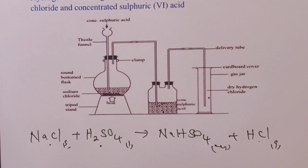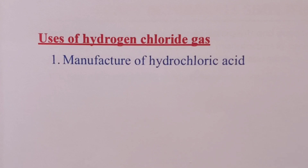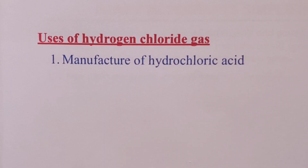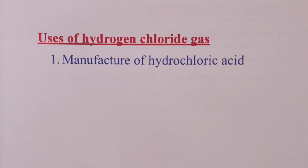We are finally looking at uses of hydrogen chloride gas to end our short video. Hydrogen chloride gas is mainly used in the manufacture of hydrochloric acid. With that we have come to the end of this video, where we discussed laboratory preparation and uses of our two gases in the topic chlorine and its compounds: chlorine and hydrogen chloride gas. Thank you for your time and keep it here for more videos on the series chemistry of gases.